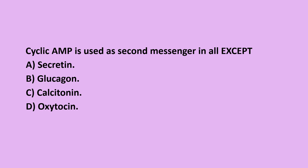Secretin, Glucagon, and Calcitonin all act through the cyclic AMP second messenger system. Oxytocin, however, acts through the inositol triphosphate and diacylglycerol second messenger pathway. So the correct answer is option D, Oxytocin, as it does not use the cyclic AMP system.